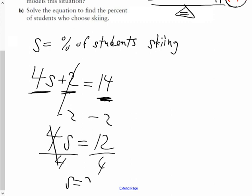To figure out that S is equal to 3. And once I've solved that, my sentence can therefore be: therefore, 3% of students chose skiing.